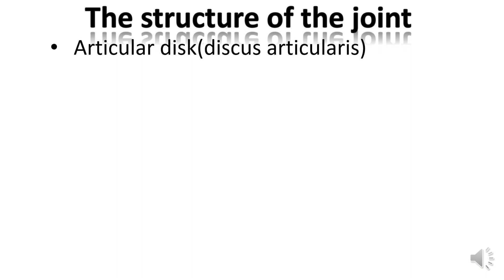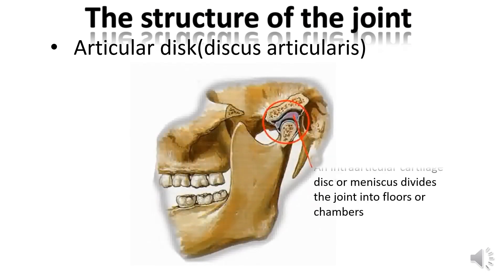Articular disc, discus articularis. It is a biconcave plate consisting of coarse fibrous connective tissue. It has an oval shape. The articular disc is located between the articular surfaces. It isolates the articular head from the mandibular fossa, dividing the joint cavity into two floors: upper and lower. The disc is fused at the edges with the joint capsule, and is located so that the articular head glides along the posterior surface of the tubercle. So at the time of chewing, the greatest pressure falls not on the back of the arch of the articular fossa, but on the articular tubercle itself.